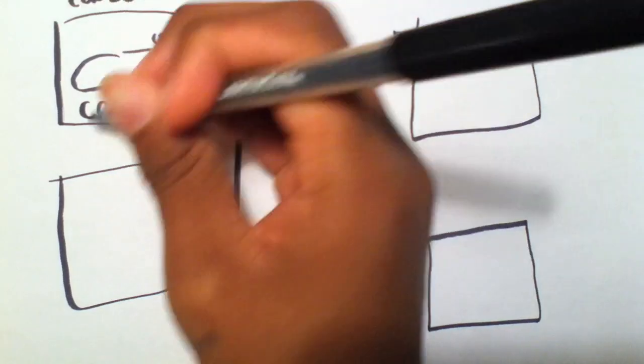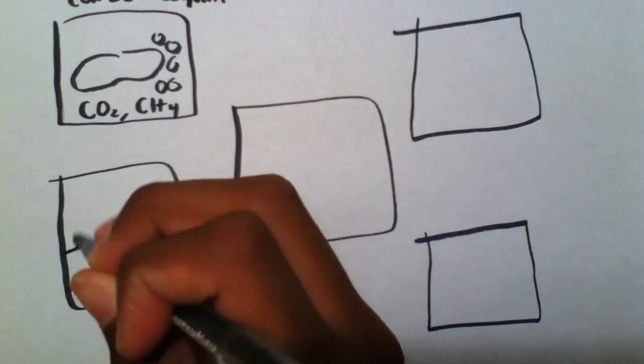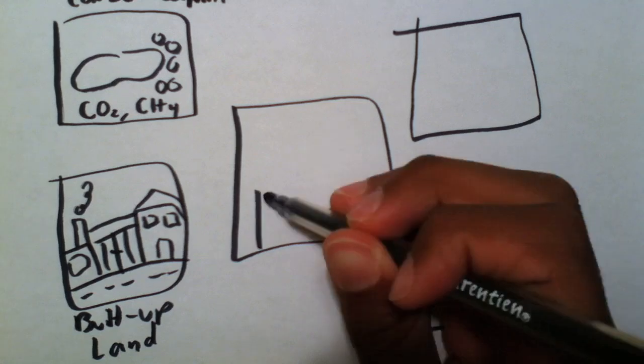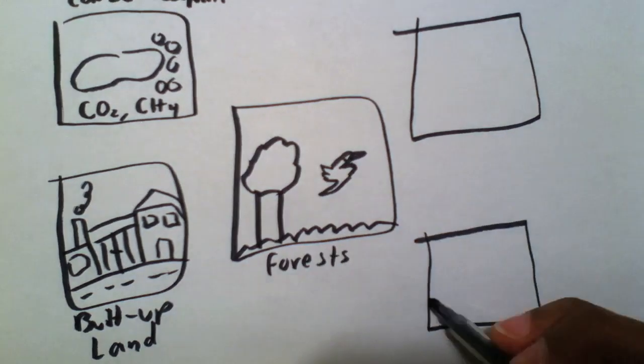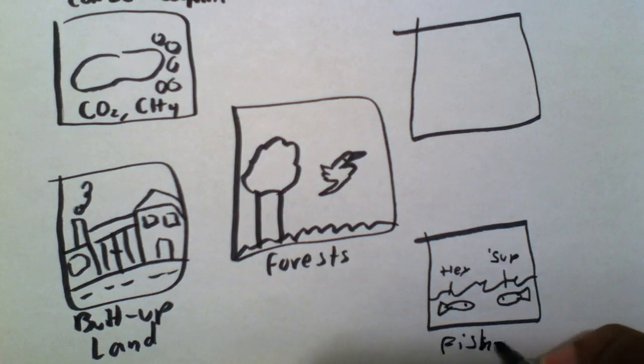The components of an ecological footprint are the carbon footprint, built-up land, forests, fisheries, and croplands and pastures.